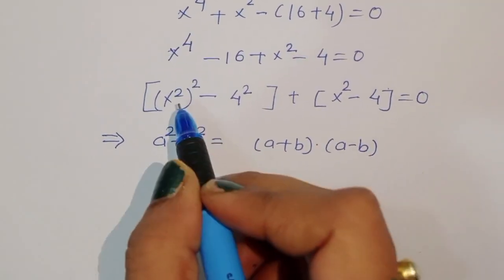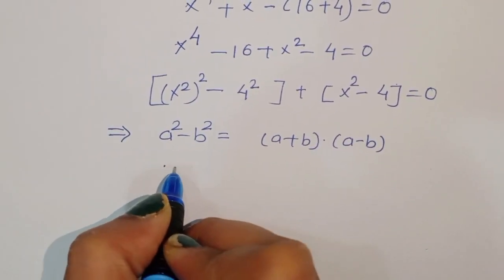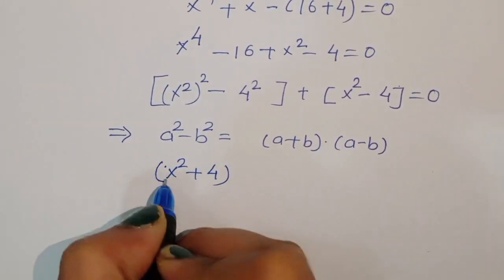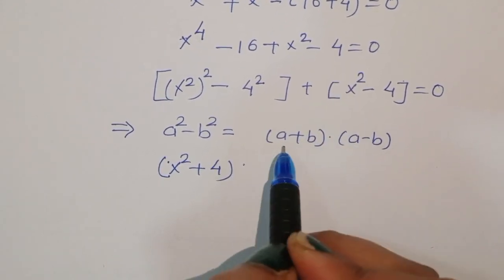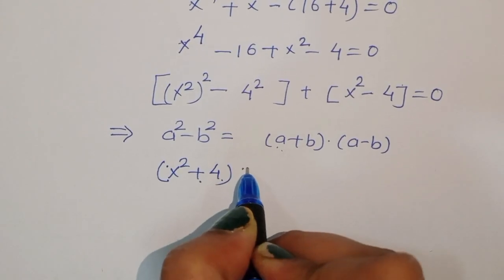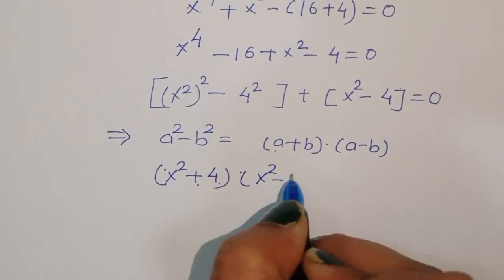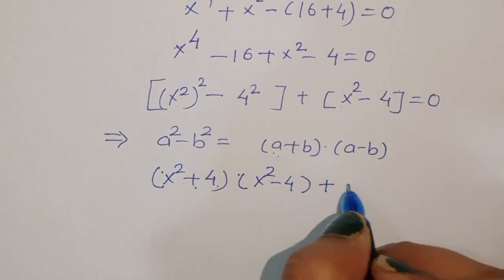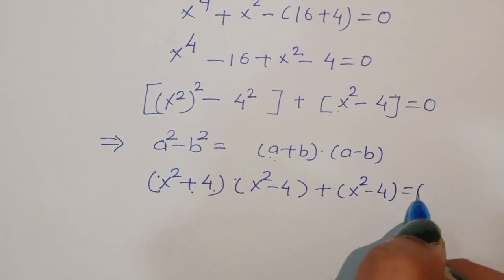Therefore, we can write this using the formula — here a is x square and b is 4 — so we get x square plus 4 times x square minus 4, plus x square minus 4 is equal to 0.